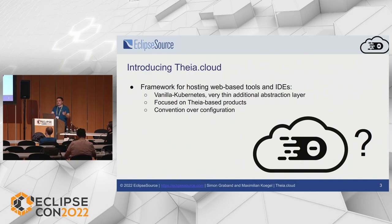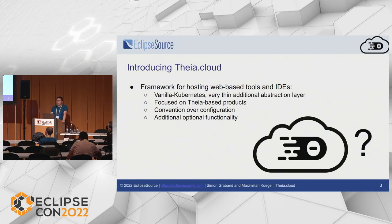For adopters, we want to allow them to get started relatively easily with Thea.cloud. We do that by providing Helm charts that you can simply adapt to your liking — for example, swap out the image you want to host — and then you can get started within minutes. We also provide additional optional functionalities that you can use but don't have to, to keep the entry level low while supporting advanced use cases later on.